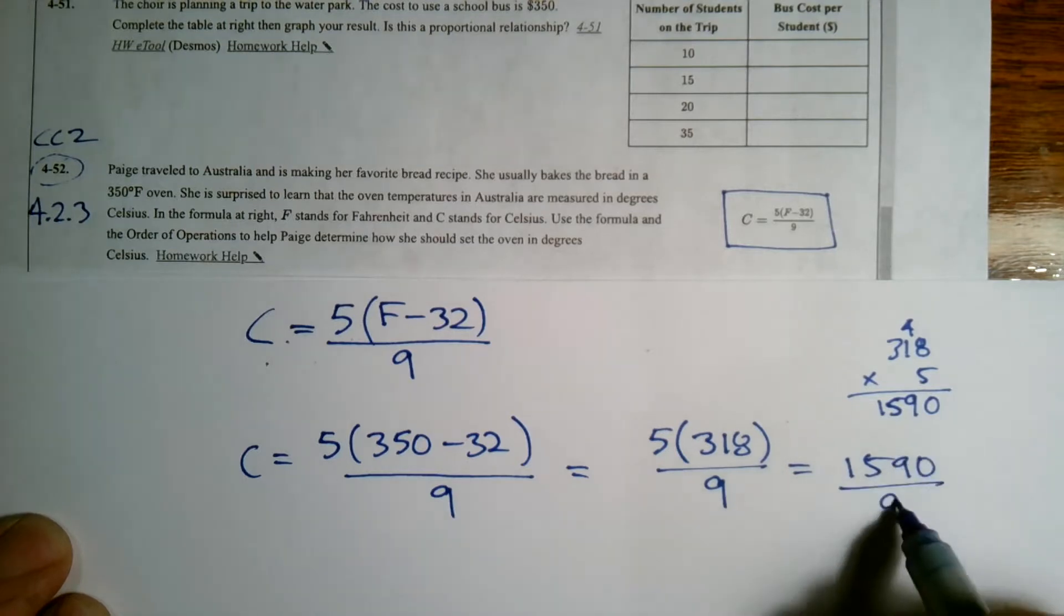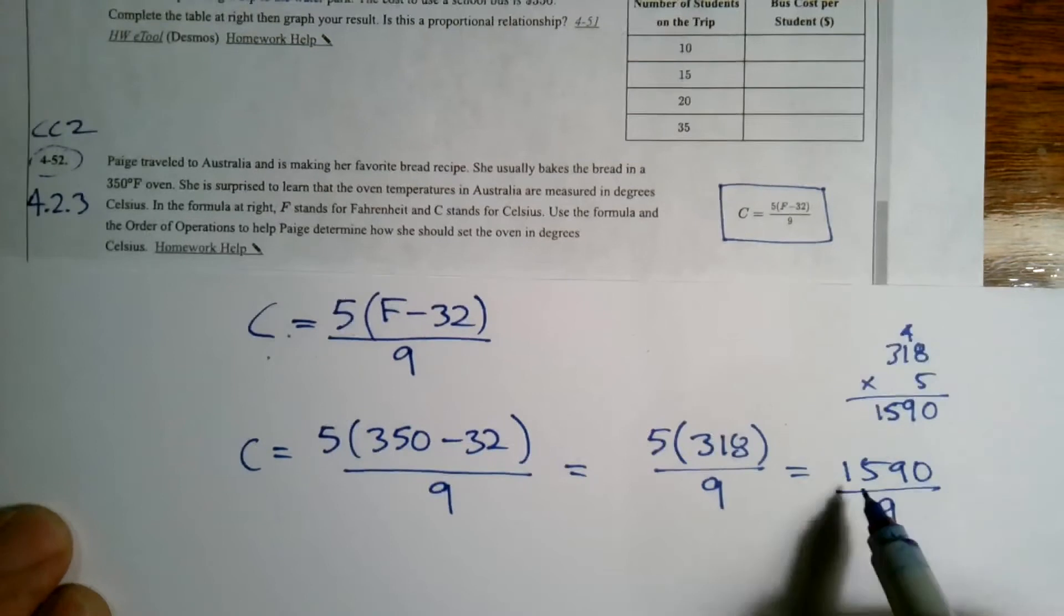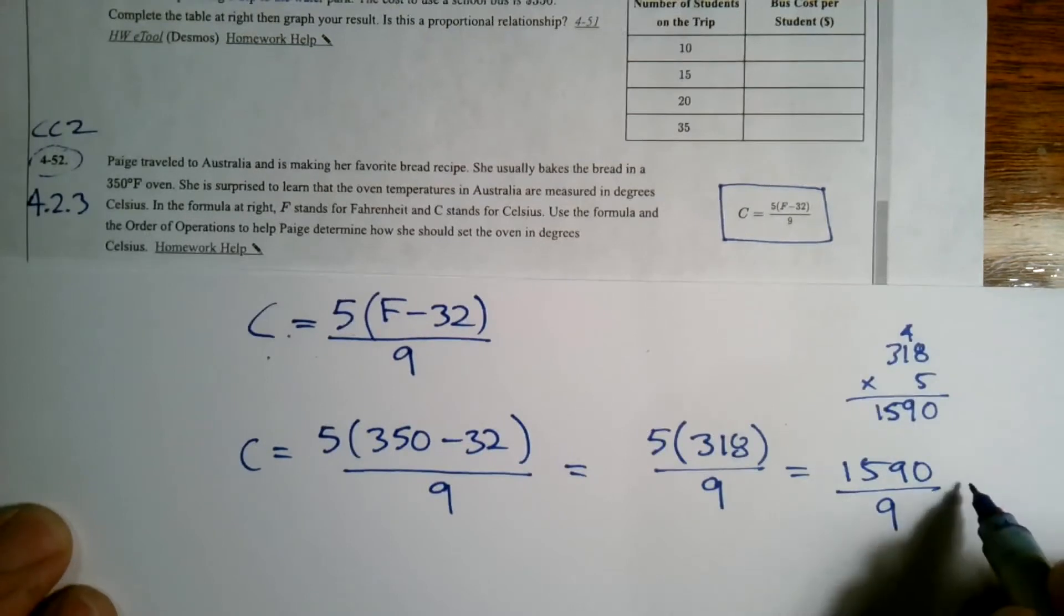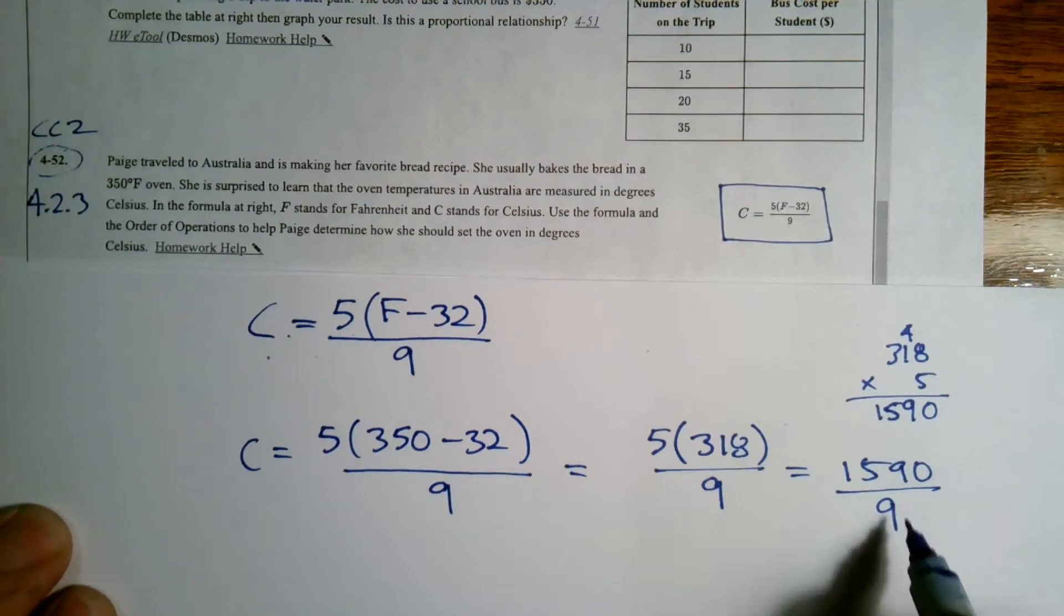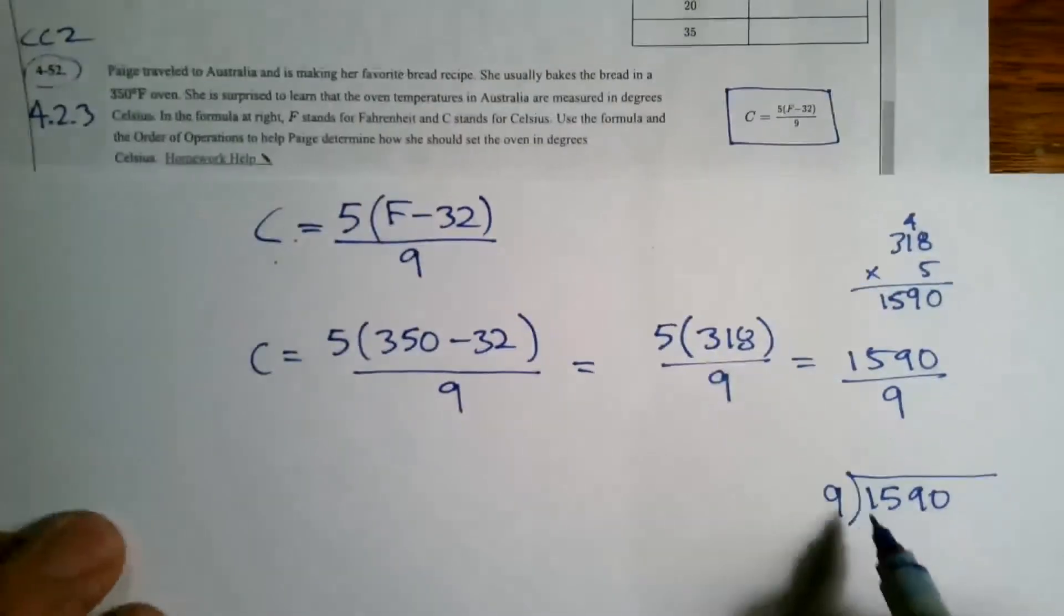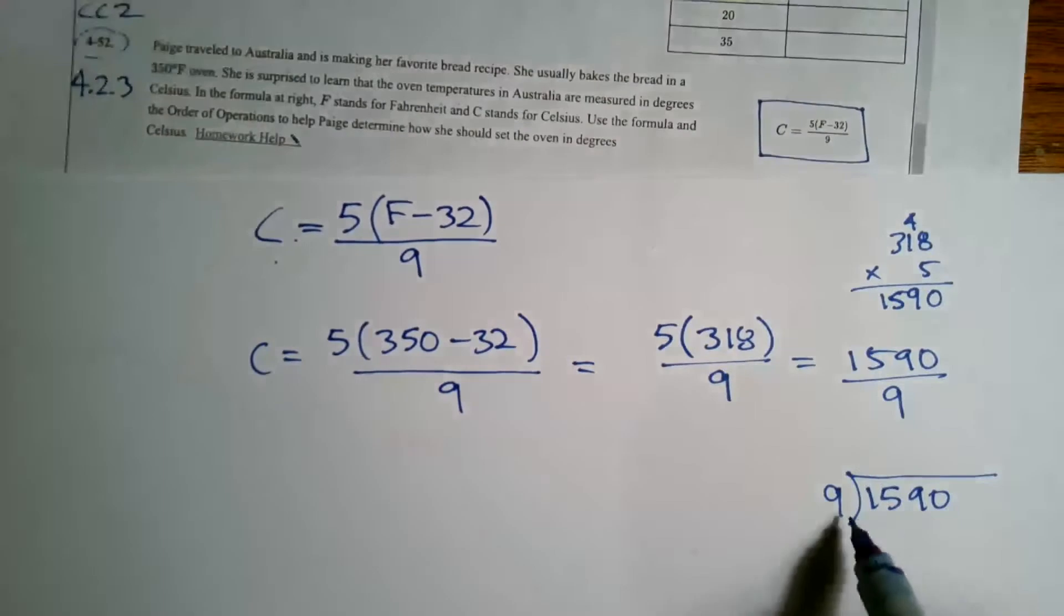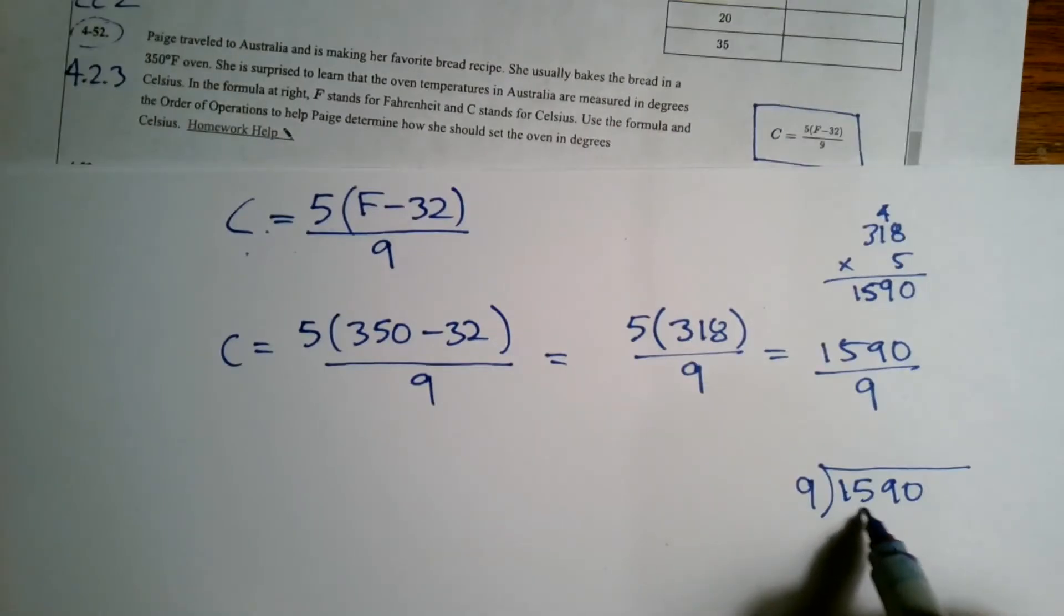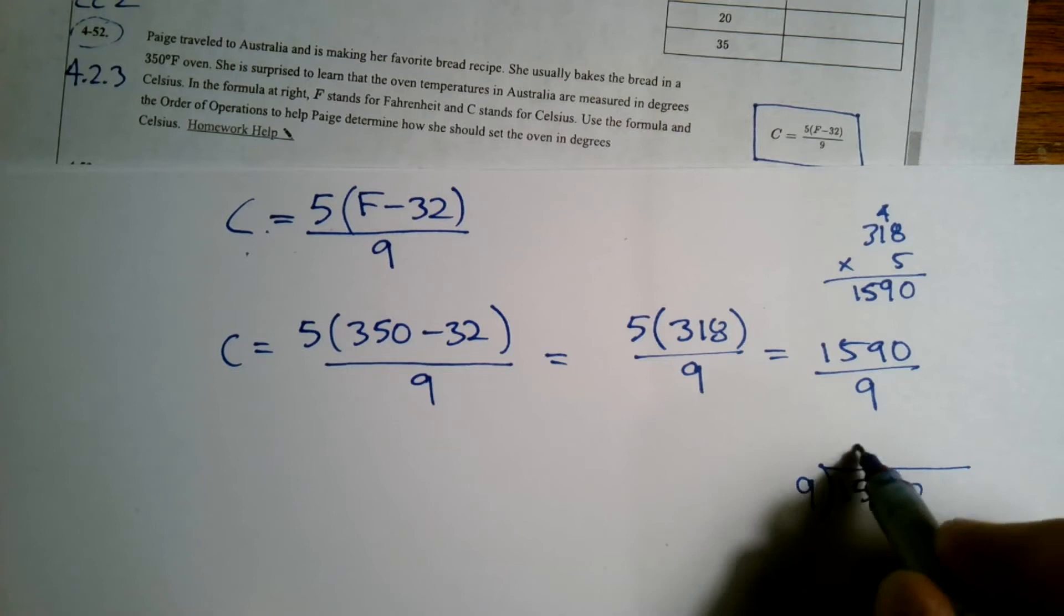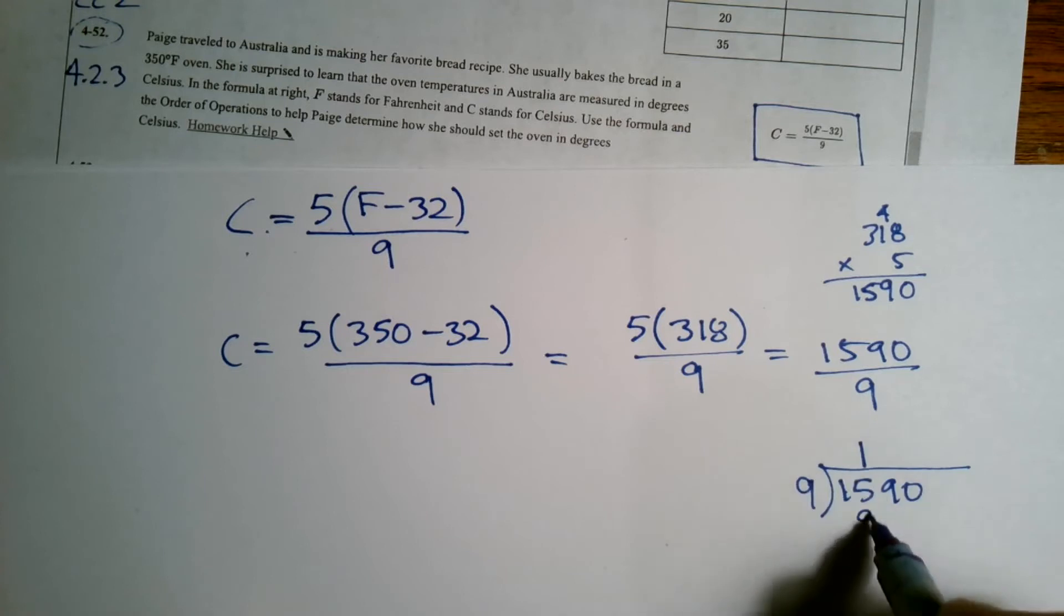Now I have all of that divided by 9. So what is 1590 divided by 9? I'll use the standard algorithm for division. So we're going to go 9 into the first two digits, the 1, 5, and it would go once. Multiply, subtract, 6. Bring down the 9.